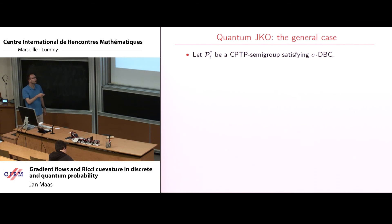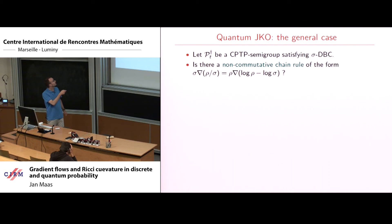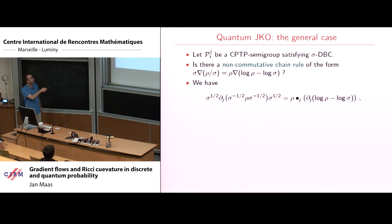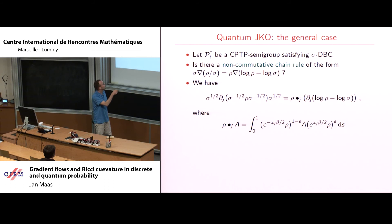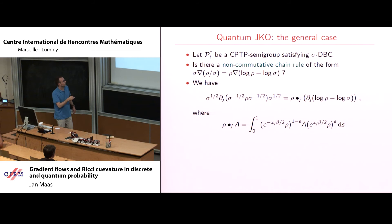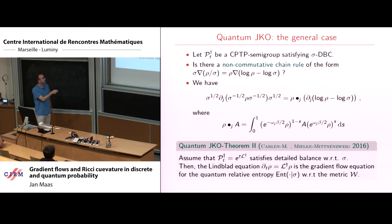The result is that for a TPCP semigroup satisfying detailed balance, the Lindblad equation is the gradient flow of the von Neumann entropy with respect to the new metric defined by this non-commutative Benamou-Brenier formula. In the general case where the stationary state is not the identity, a more involved non-commutative chain rule—involving square roots of sigma placed appropriately and weights omega_j from the detailed balance condition—is required, but the structure and conclusion are the same.